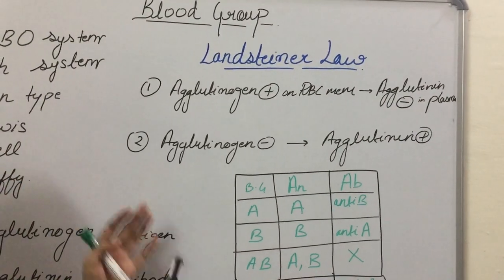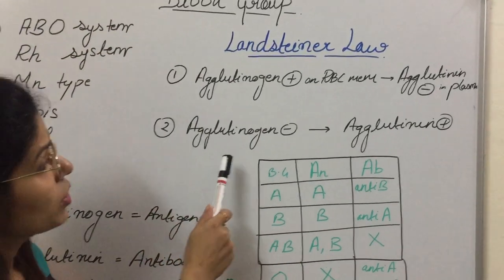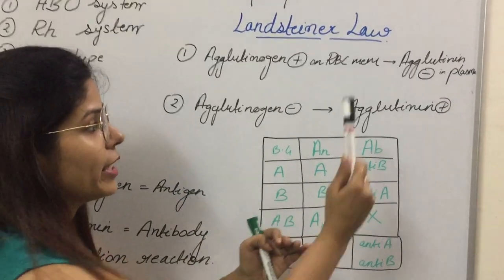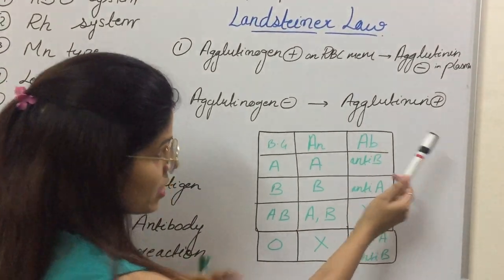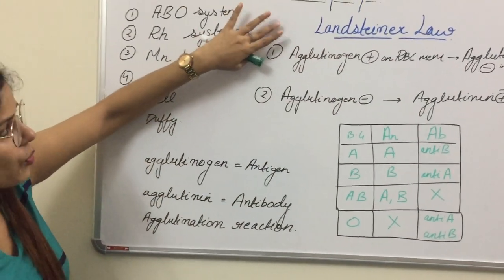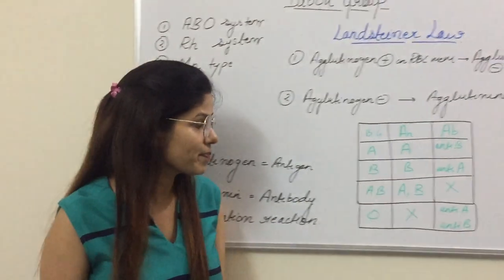Now, the second law is just vice versa of the first, which states that if the agglutinogen is absent on the RBC membrane, then the corresponding agglutinin must be present in the plasma. So it's very easy. You need to just remember this first one and the other is just opposite of the first component.